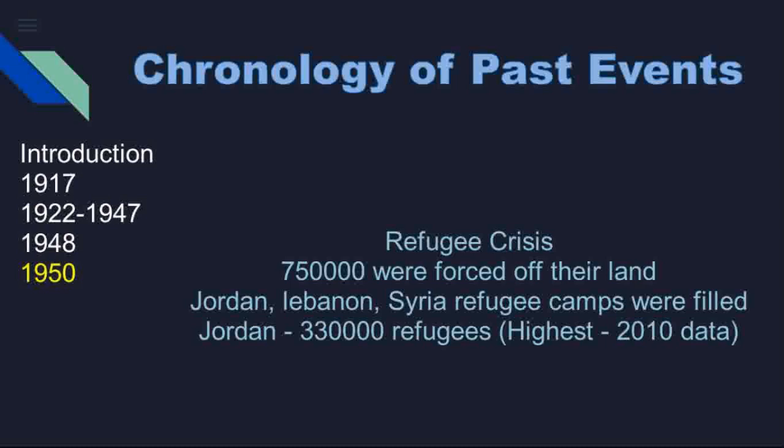Arab countries like Jordan, Lebanon, and Syria granted refuge to those displaced people and refugee camps were filled in the region. According to 2010 data, Jordan became the country with the highest number of Palestinian refugees — 330,000 Palestinian refugees. Jordan also tried to provide Jordanian citizenship to the Palestinian refugees.